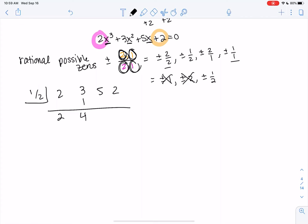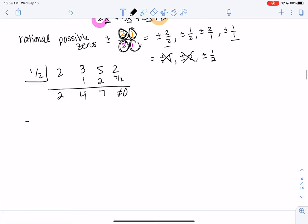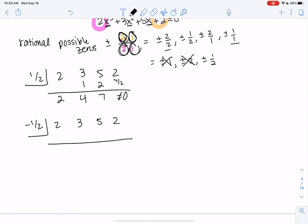We get 2. 1 half times 2 is 1. 4. 1 half times 4 is 2. 7. 7 halves. I don't know what this is. It's not 0. All right. Hopefully this one works. Otherwise, we are out of options.